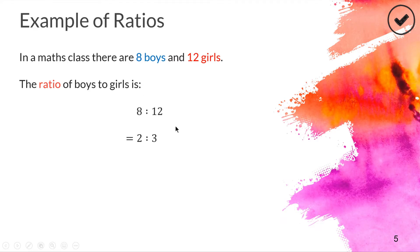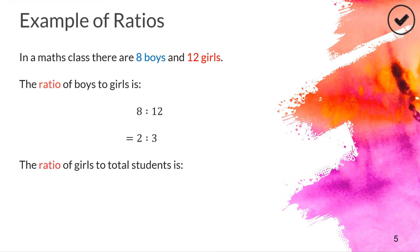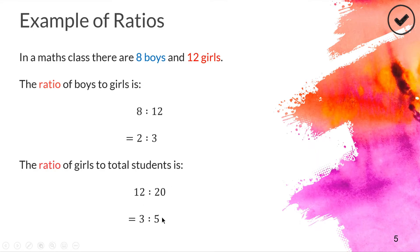The way we simplify a ratio is by looking for a number that multiplies into both sides and then dividing by that number. Another example: the ratio of girls to total students would be 12 girls to 20 students. Again, we can write this with smaller numbers. Twelve is three lots of four and 20 is five lots of four, so we can simplify this ratio to three to five instead of 12 to 20. It says the exact same thing but with simpler numbers — that's why we call it a simplified ratio.